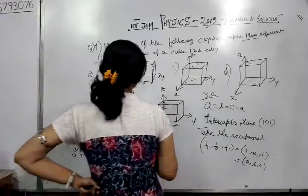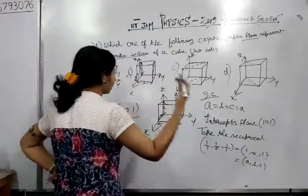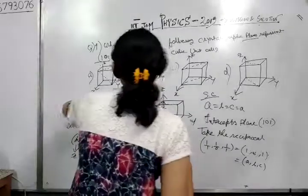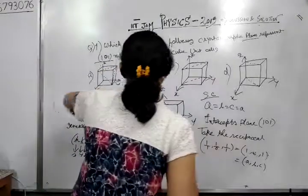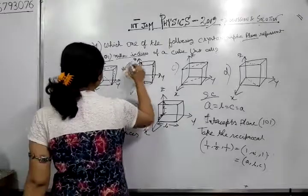As we take A equals 1 and C equals 1, this plane is correct for the cubic unit cell. Option B is correct.